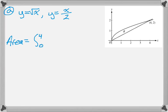So we know that's going to be the integral from 0 to 4 because they give us the intersection point of the top curve, which is radical x, minus the bottom curve, which is x over 2, parentheses, and dx.